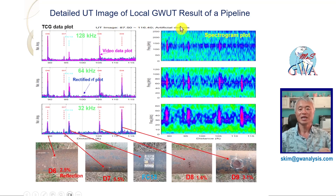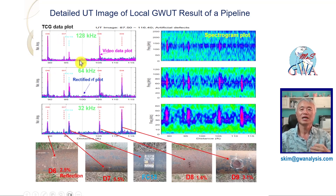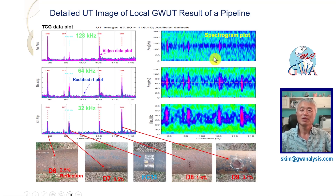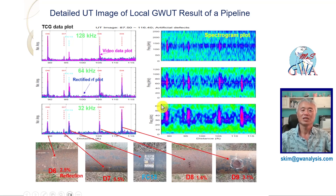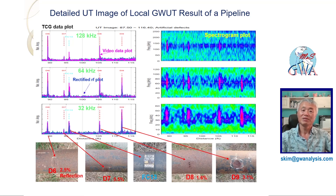This slide shows the detailed UT image of the selected region. The detailed UT images of GuideWave UT include the TCG plot and video data, rectified RF data, and the spectrogram plot. Video data were plotted with magenta color, rectified RF with blue color, and spectrogram data in a 3-dimensional color plot using a green-blue-red sequence for signal amplitude, with red being the highest amplitude. The x-axis and y-axis of the spectrogram plot are distance and frequency respectively. All five signals marked in the video data plot are shown as vertical red lines in the spectrogram, confirming the received signals are non-dispersive T01 mode, giving more confidence in the findings.